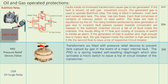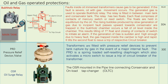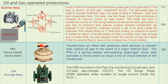OASR — Oil Surge Relay: The OASR is mounted in the pipeline connecting the conservator and the on-load tap changer (OLTC). The oil surge relay operates when a sudden oil surge occurs inside the OLTC, on the principle of the Buchholz relay, and initiates a trip without any alarm.